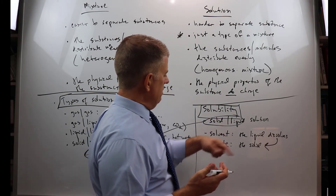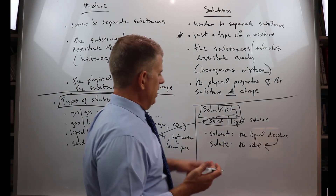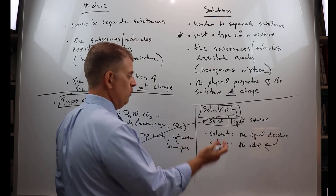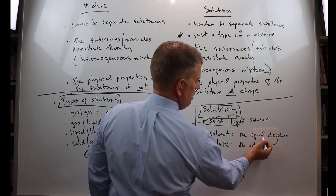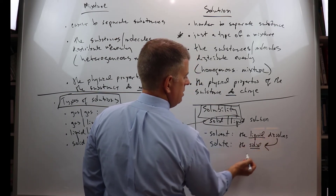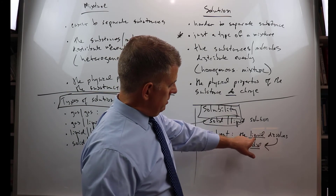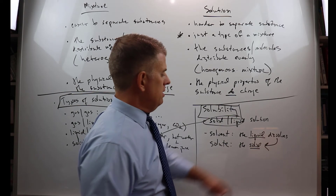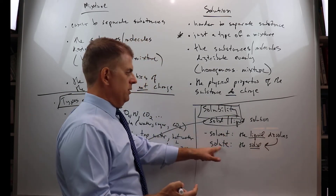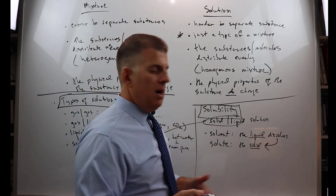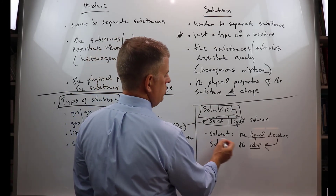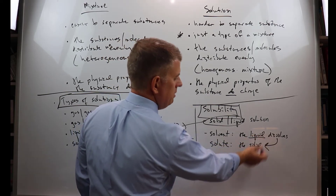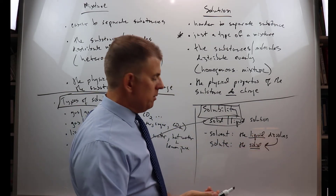Those aren't commonly used words, so how do you remember which is the liquid and which is the solid? One trick: look at the length of the words. 'Liquid' has more letters than 'solid,' and 'solvent' has more letters than 'solute' — so solvent goes with liquid, and solute goes with solid.